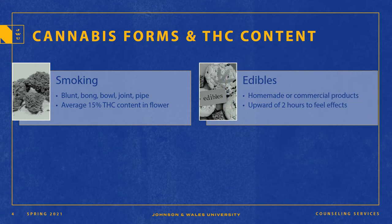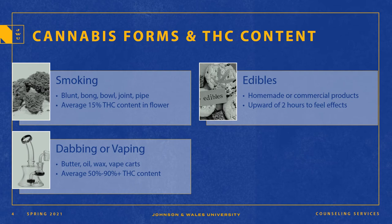Edibles come in a variety of forms — they can be homemade or bought commercially — and it takes about two hours to feel the effects of edibles. So you have to be very careful of how much you consume, as consuming too much could lead to very high anxiety, agitation, and sometimes psychosis, which requires hospitalization. Dabbing or vaping are really just means of using high THC content products. Dab carts are very common for vaping and can have THC content of 90% and above. The higher the THC content, the more functional impairment that will occur and the more addictive the substance is going to be.